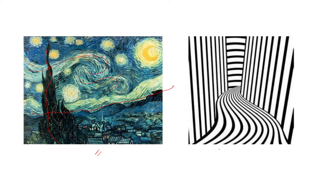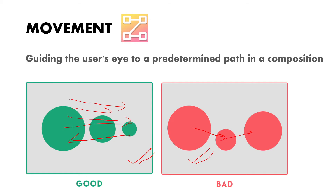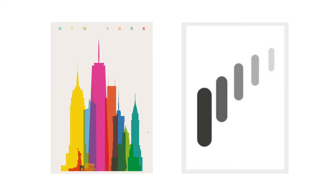Examples of movement show how your eyes move in directions — up, down, tilted — based on how elements are arranged. Next is hierarchy. Hierarchy is arranging elements to show their order of importance. In the movement example, hierarchy was also being followed alongside movement, so two principles were applied at once. Here, the most important element should be largest, then progressively smaller. The wrong use of hierarchy is when a title is made very small while less important elements are prominent.